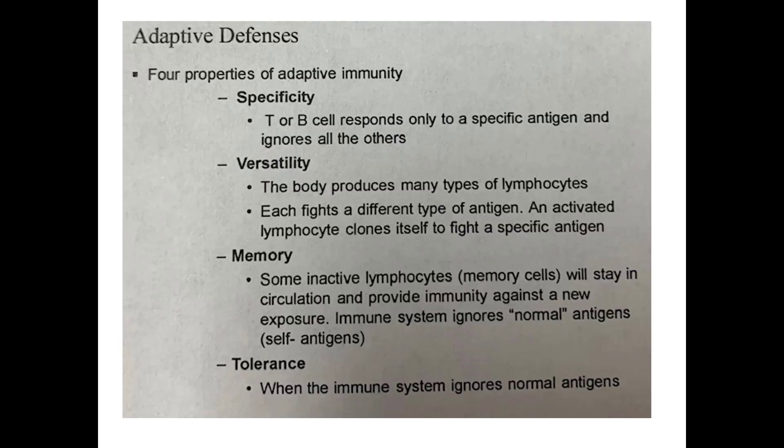There are four properties of adaptive immunity. Specificity: T or B cells respond only to specific antigens and ignore all others. Versatility: the body produces many types of lymphocytes, each able to fight a different antigen, and an activated lymphocyte clones itself to fight a specific antigen. Memory: some inactive lymphocytes are memory cells that remain in circulation and provide immunity against a new exposure to the same antigen. Tolerance: the immune system ignores normal, self-antigens.